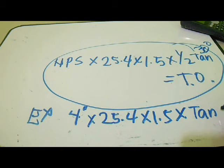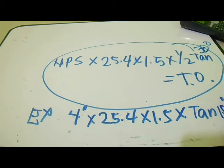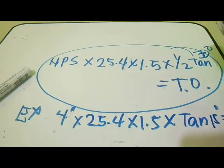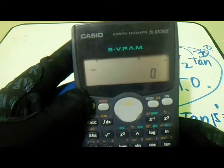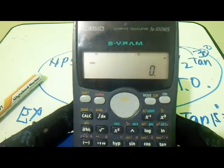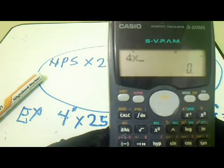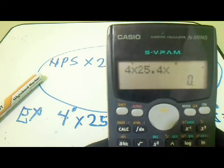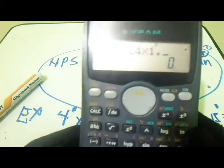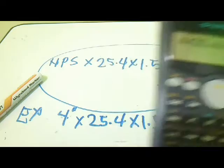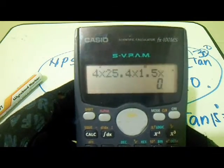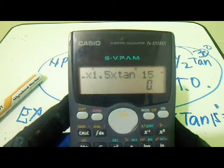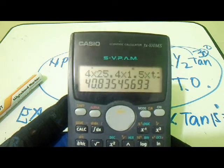This one-half tangent means this 30 degrees, our one-half is 15 degrees equals take-off. Let's use this FX-100MS calculator. So, 4 inch multiply by 25.4, multiply by 1.5, multiply by tangent of 15 degrees, and equals.